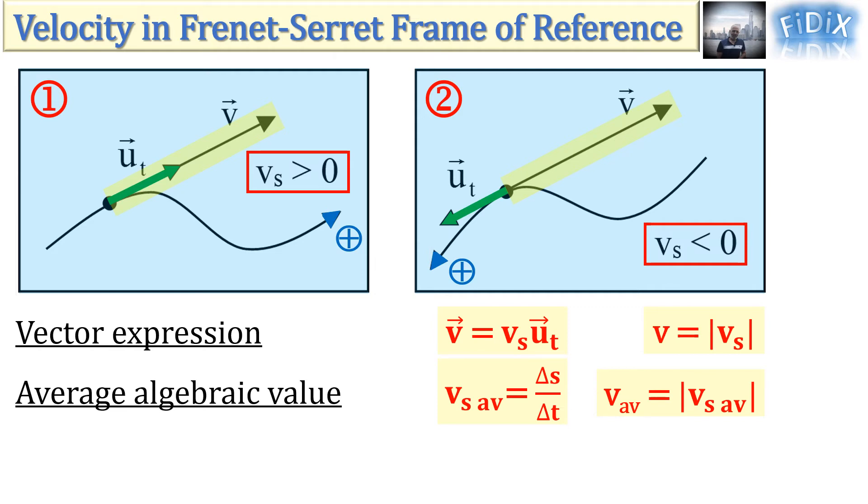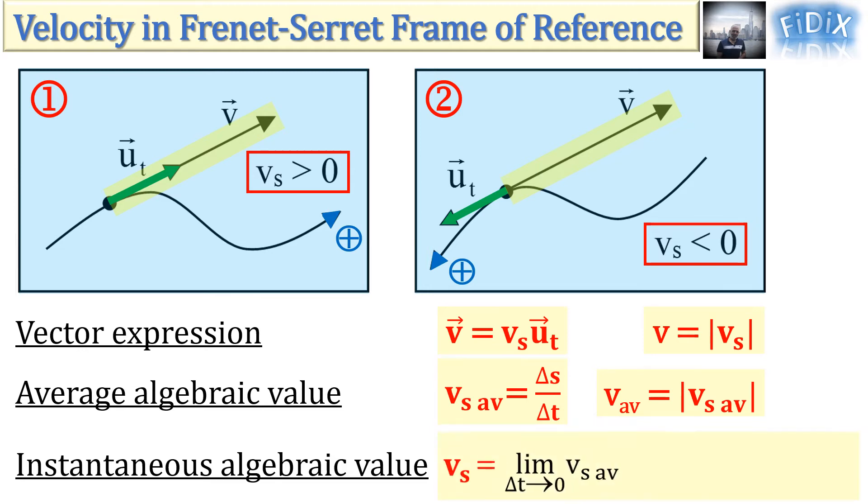The instantaneous algebraic value is the average algebraic value when the duration is too small. This can mathematically be written as the limit when delta t approaches 0 of v_s average and leads, after replacing v_s average by delta s over delta t, to the derivative with respect to time of the curvilinear abscissa, s prime.